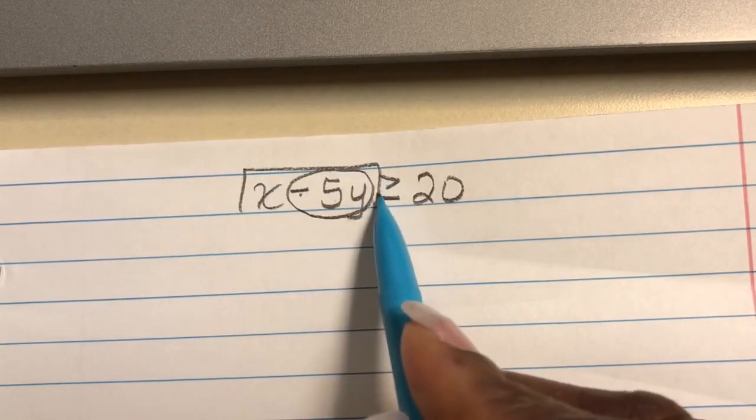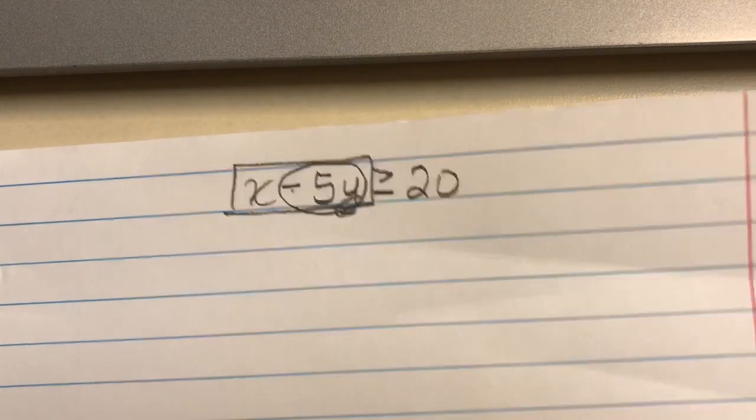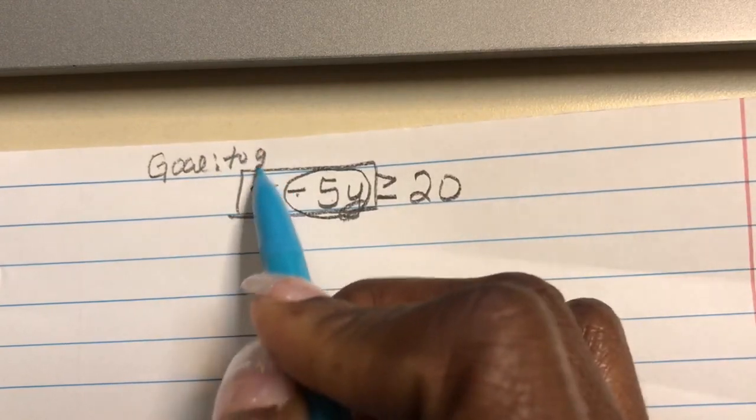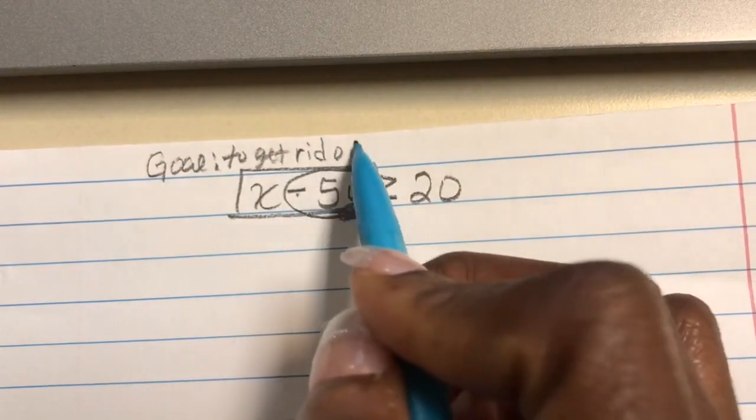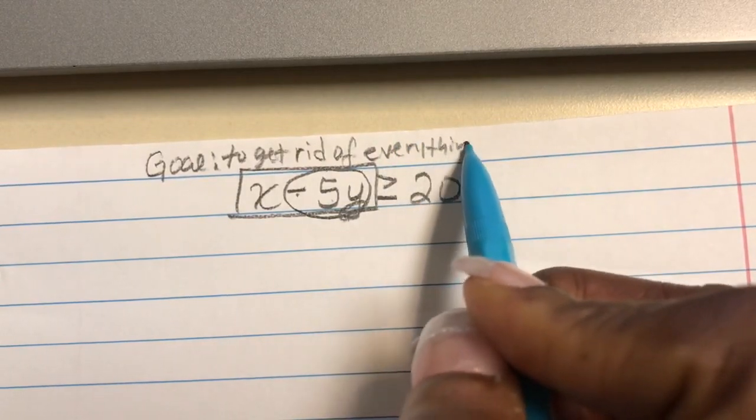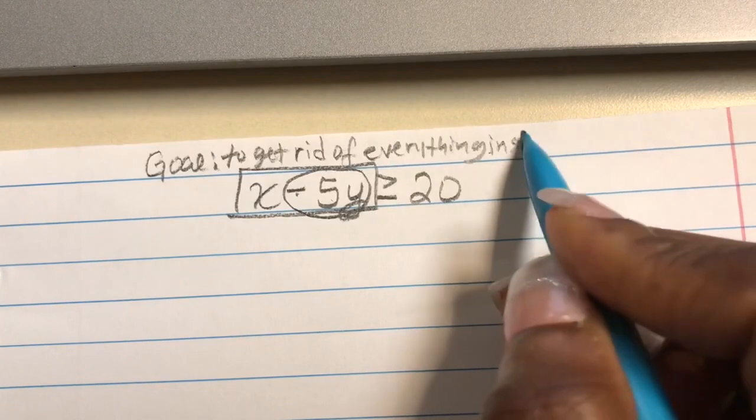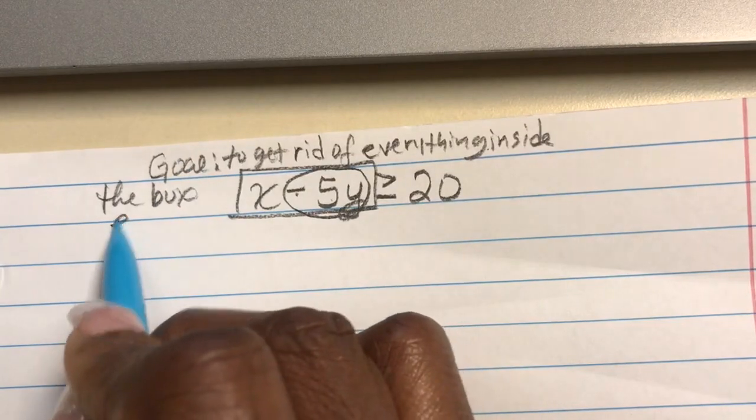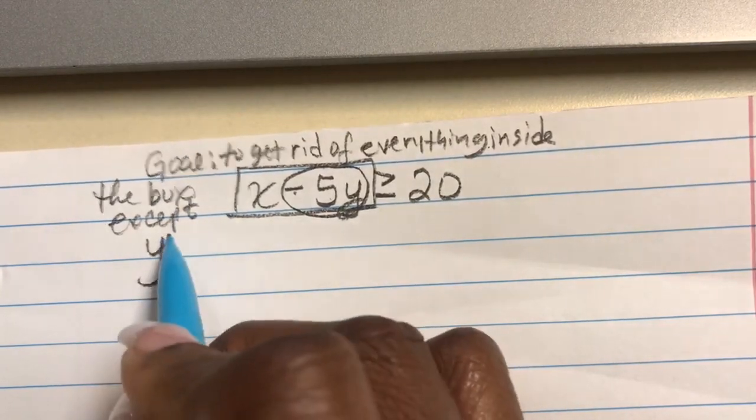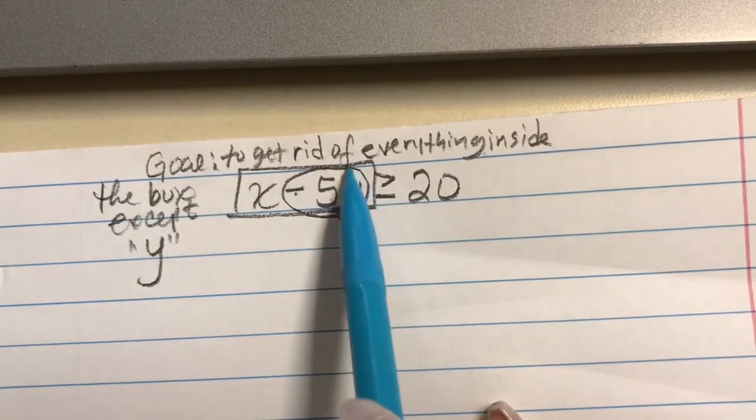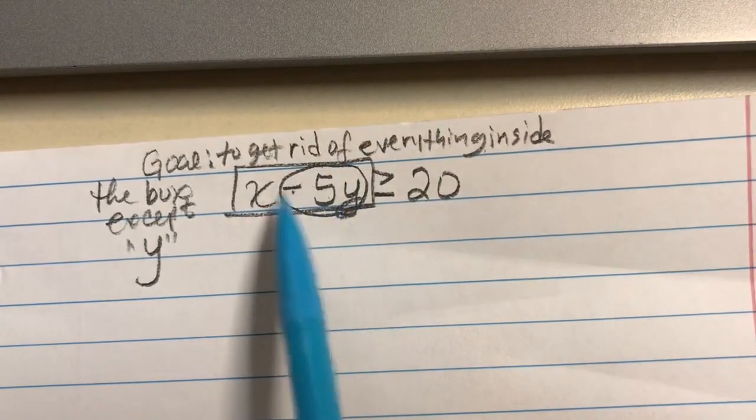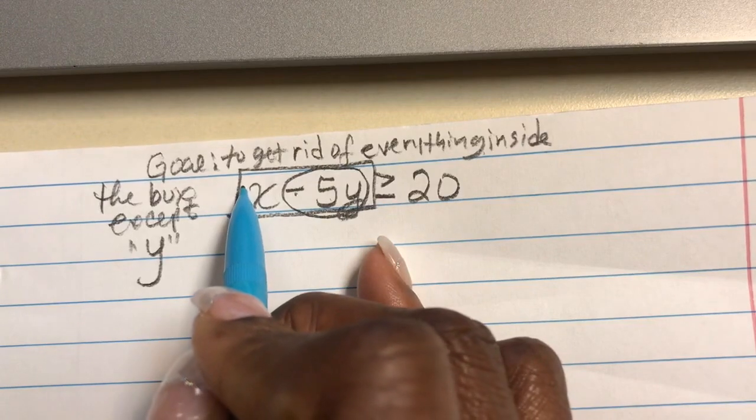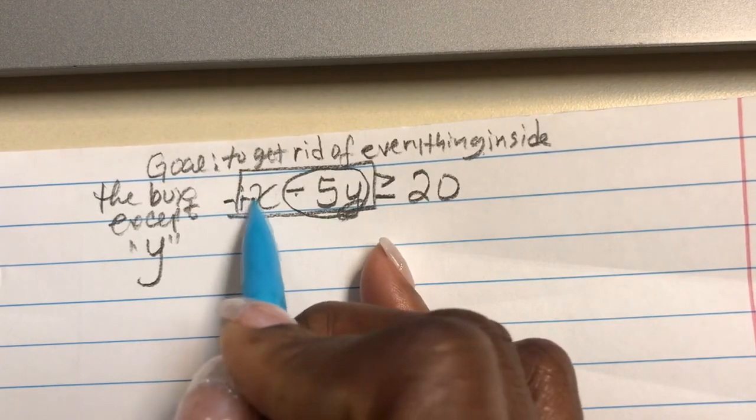Then we're going to put a box around the side that has the y value. Our goal is to get rid of everything inside the box except y, except our letter y. So we are going to leave this for last. So first we have to start out getting rid of the x. In front of this x, there's an imaginary, if you see nothing, it means that there's an imaginary plus sign.